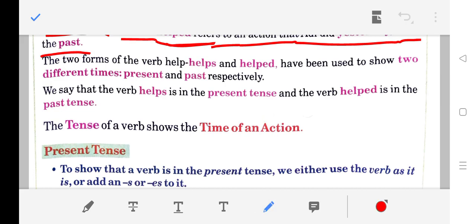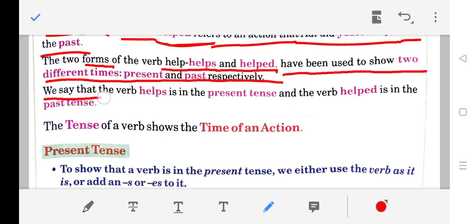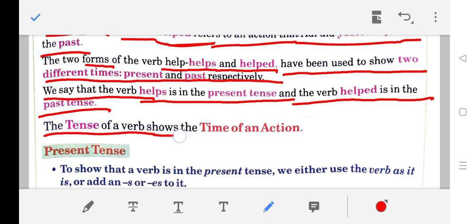The two forms of the verb 'helps' and 'helped' have been used to show two different times: present and past, respectively. We say that the verb 'helps' is in the present tense and the verb 'helped' is in the past tense. The tense of a verb shows the time of an action.